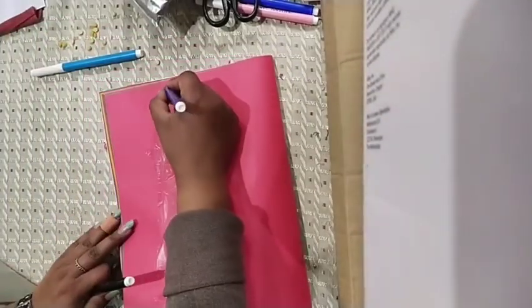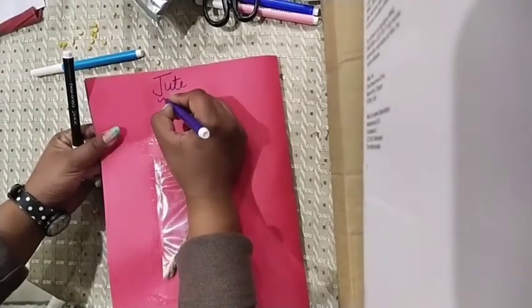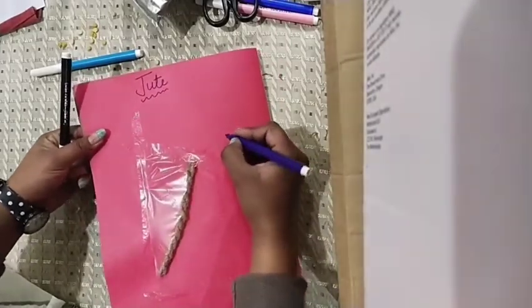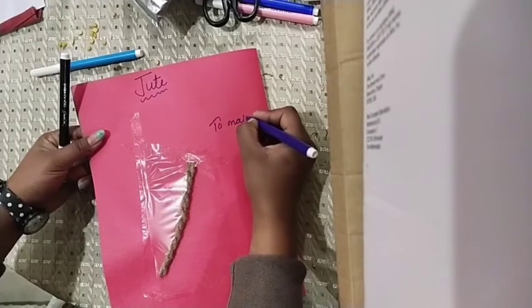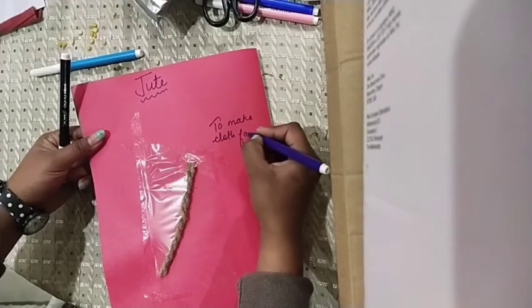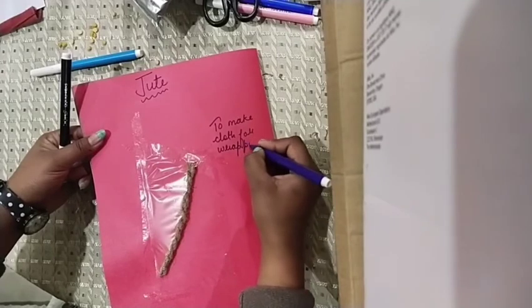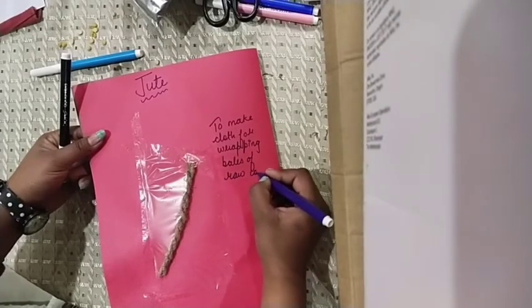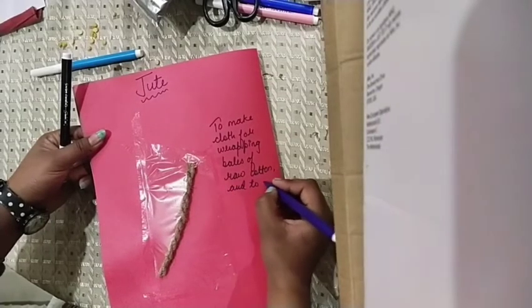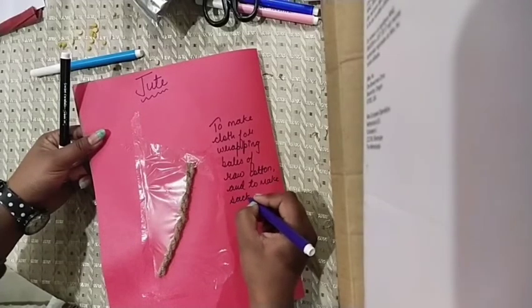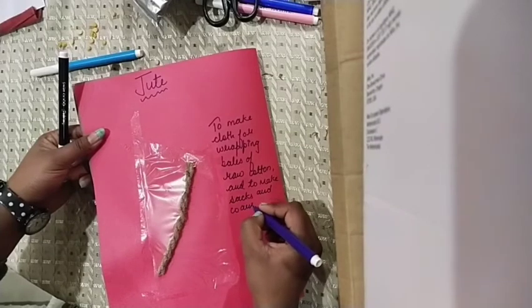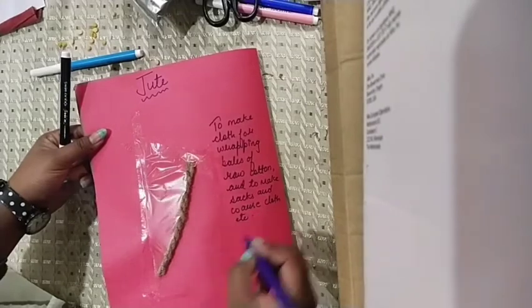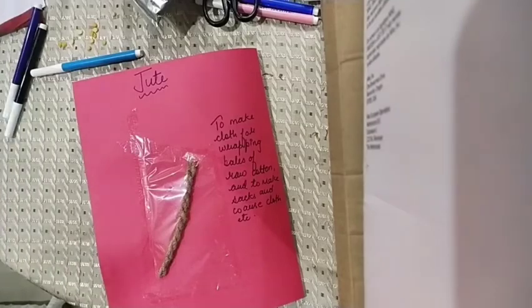Then last we have jute. Jute — to make cloth, for wrapping bales of raw cotton, and to make sacks and coarse clothes, etc.